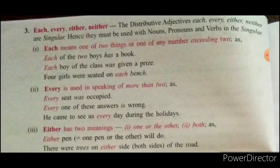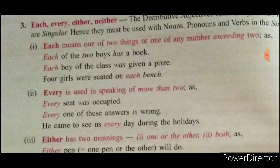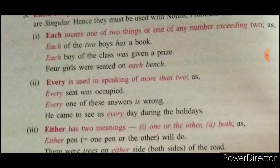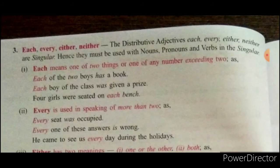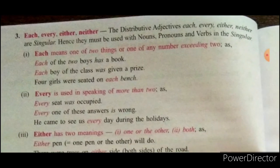Every is used in speaking of more than two. 'Every seat was occupied' — we are talking about many. 'Every one of these answers is wrong' — the verb is singular because distributive adjectives each, every, either, and neither are singular adjectives.